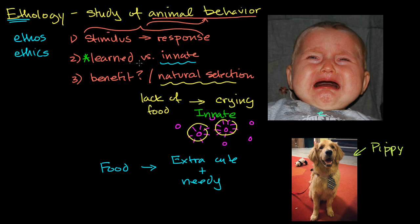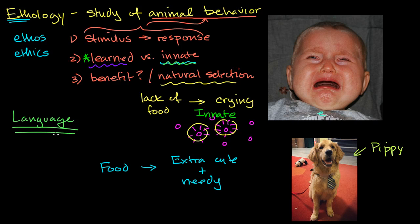A good example of something that's in between learned and innate for human beings is language. People dedicate their lives to studying human language. We have a lot of reason to believe that humans have an innate bias to wanting to communicate and having structured language, but you clearly learn your particular language. If you threw a bunch of babies on an island — a very cruel experiment — at some point, if they survive, they would develop their own language. But we also know that if you put a baby in the context of someone speaking English or French or Hindi, they will learn that language. In most cases, it's someplace in between, or a combination of learned and innate.